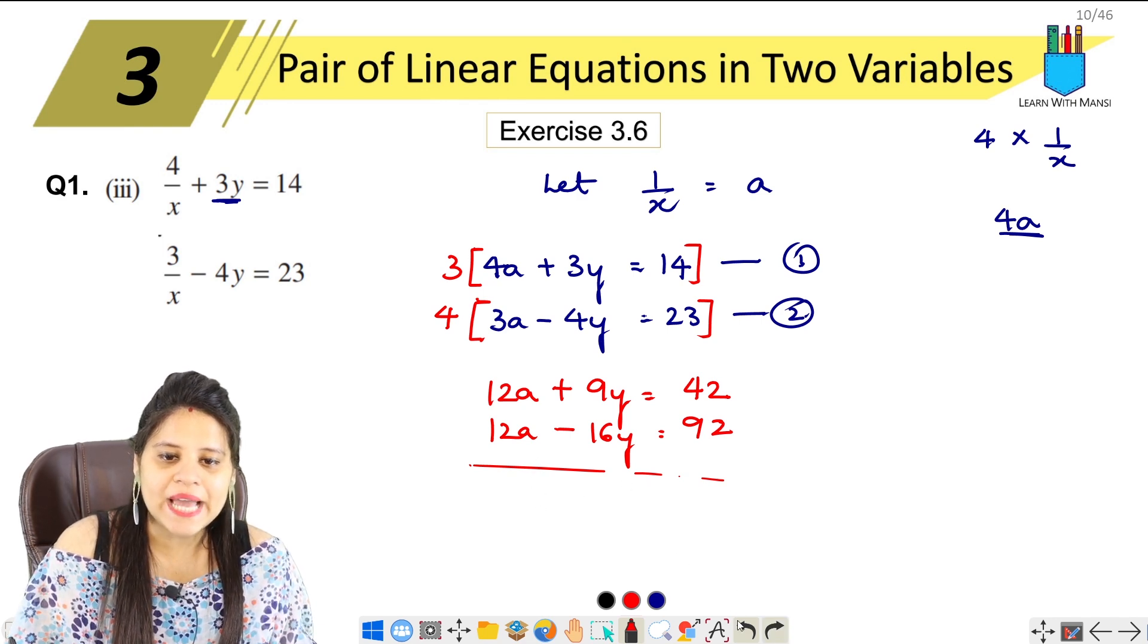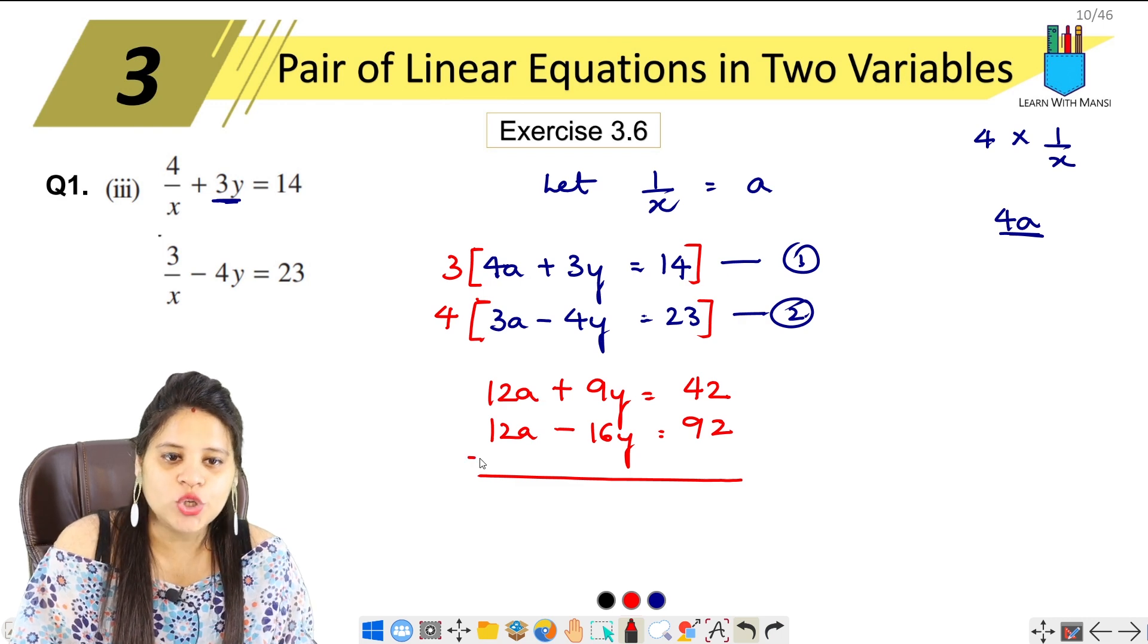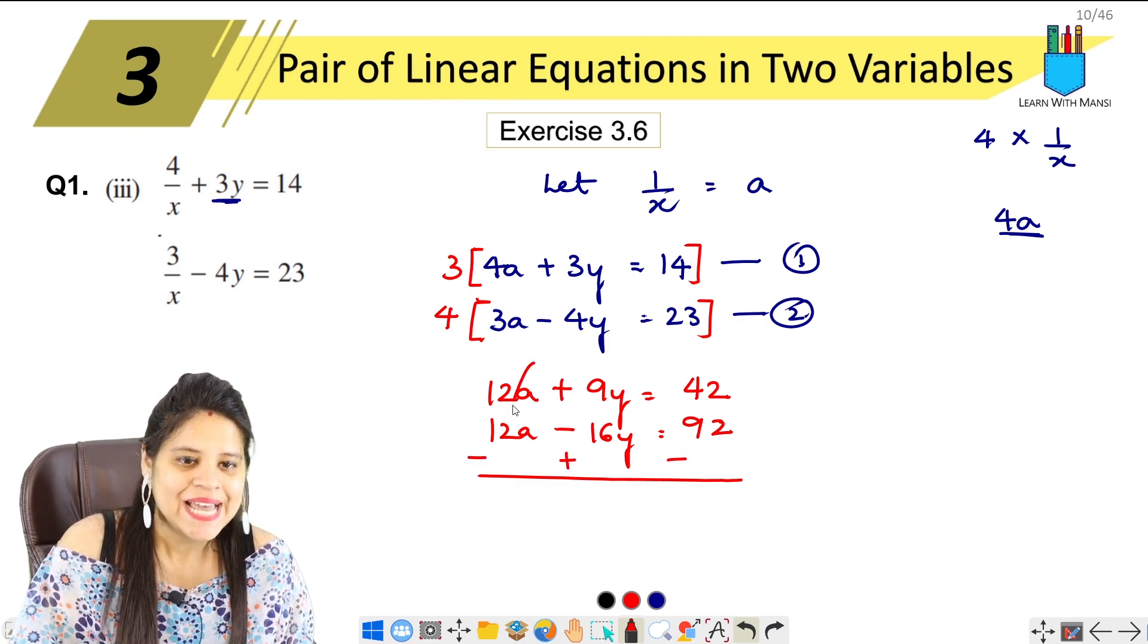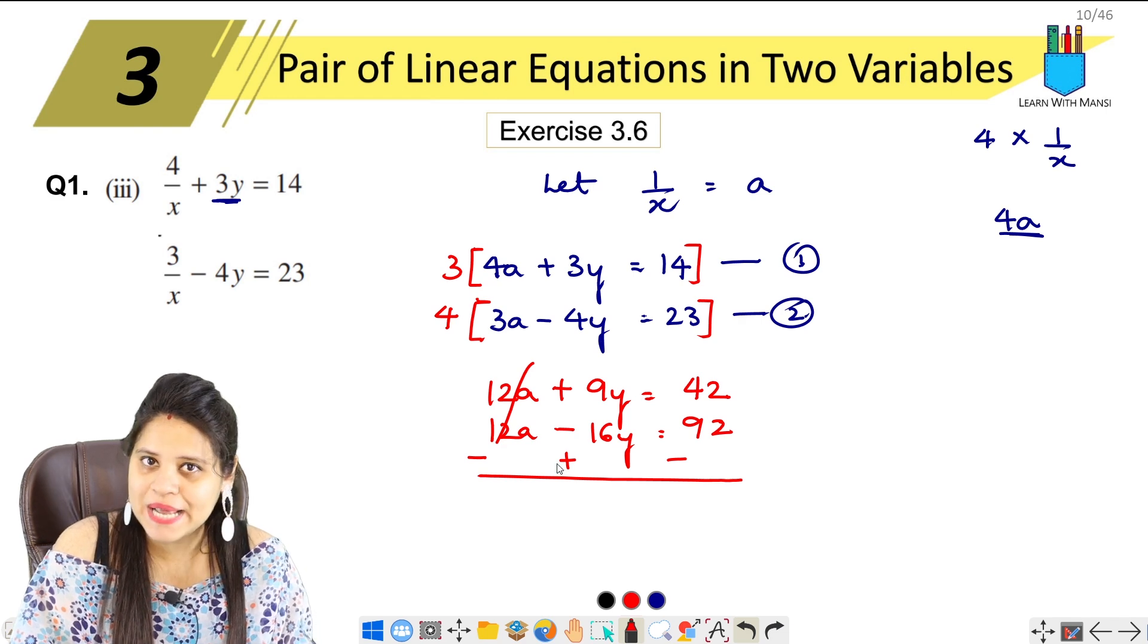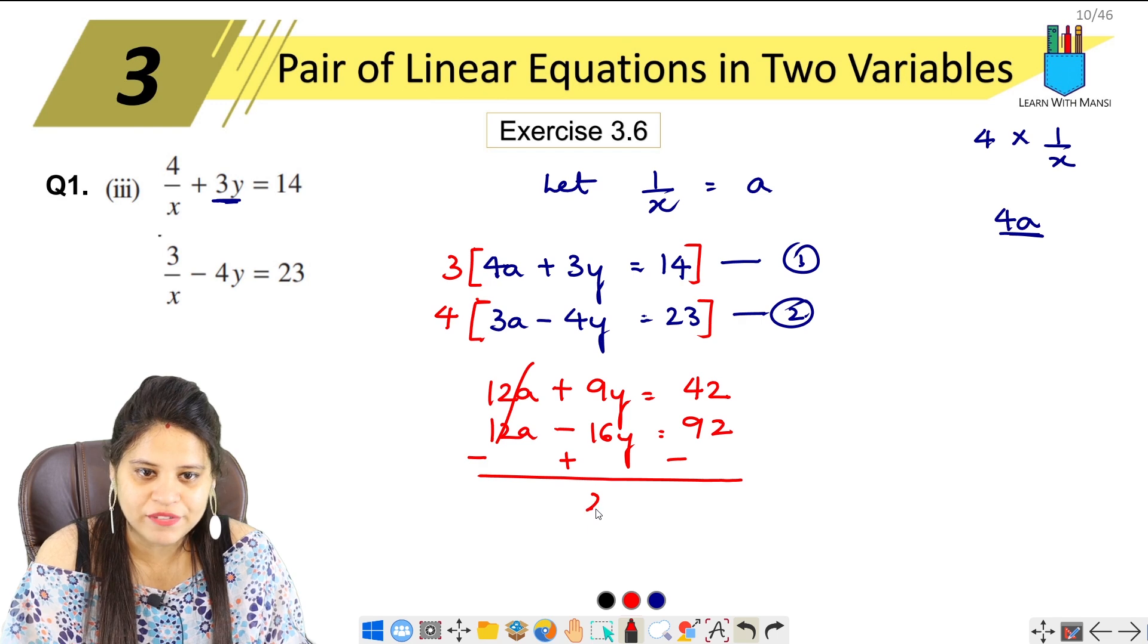Now we have to solve it. So again, we need to solve it here. We need to change the sign. So this is minus, this is plus, this is minus, this is plus. This is minus, this is both. Cancel. Plus, plus, plus, plus. 16 plus 9, 16, 20, 25.